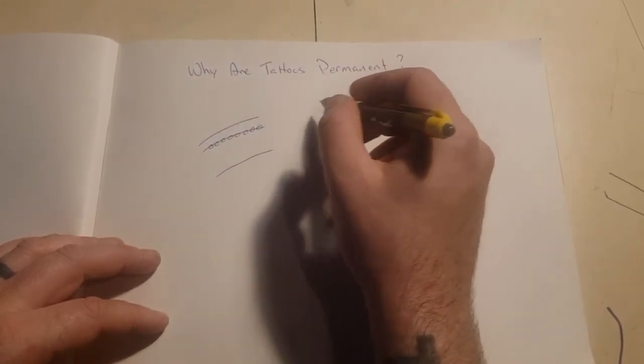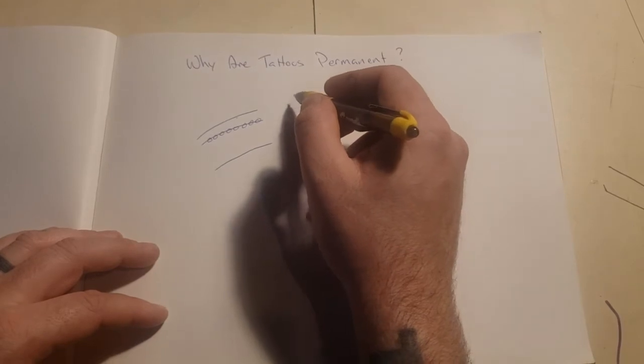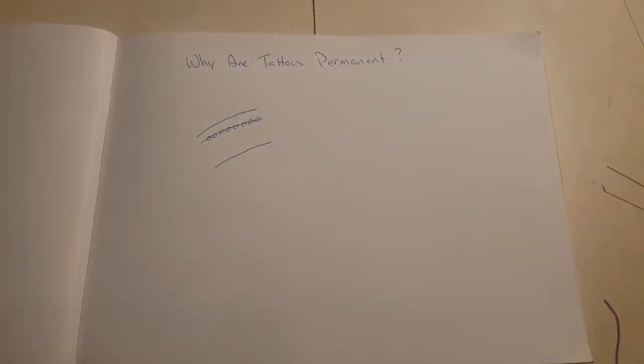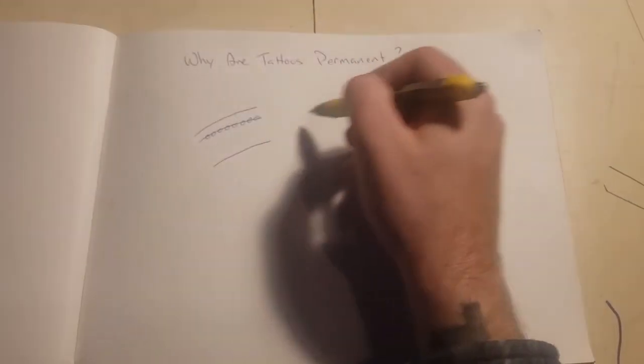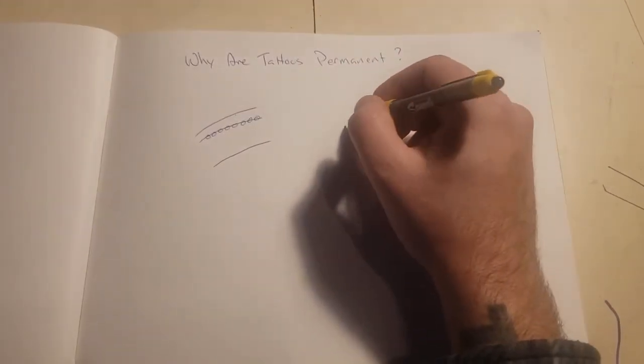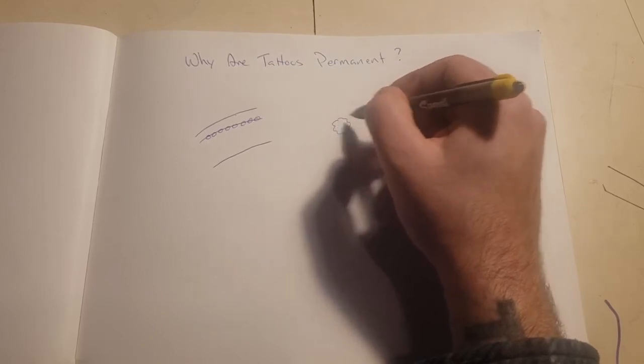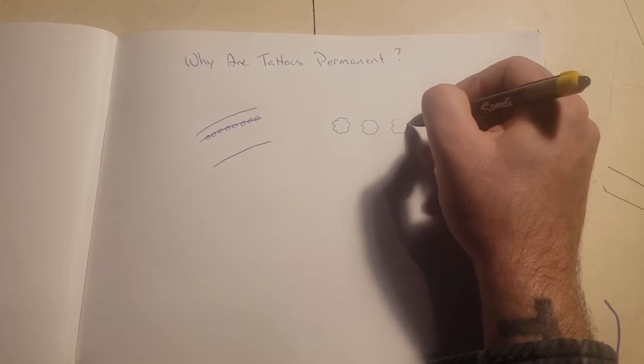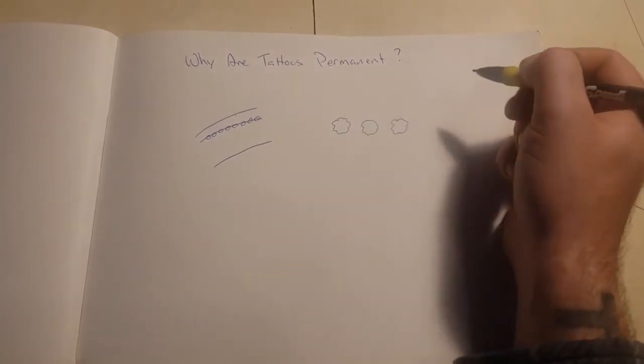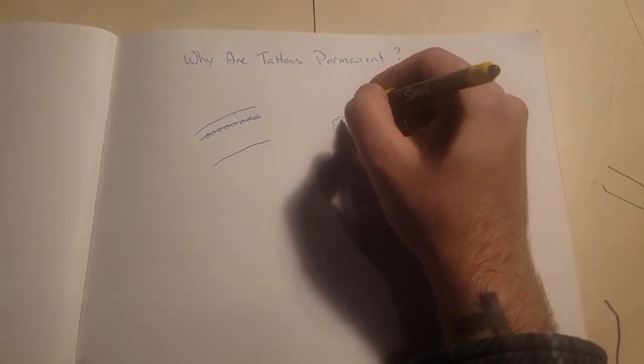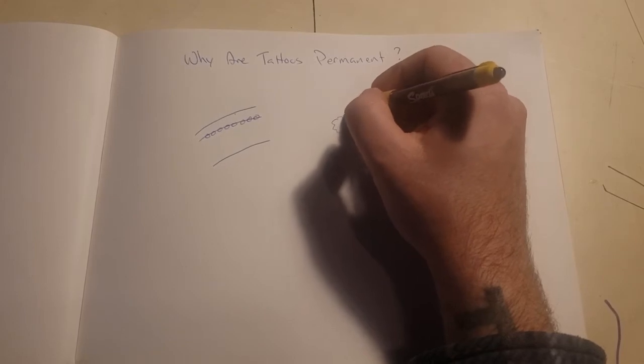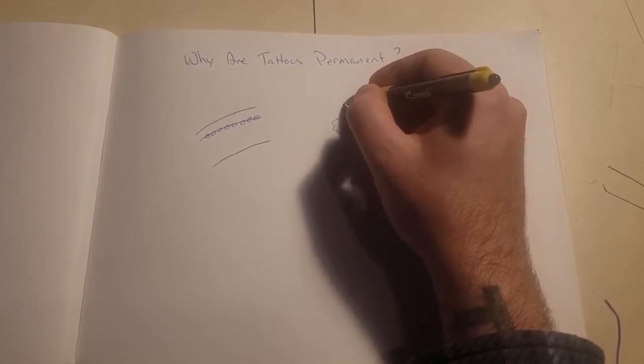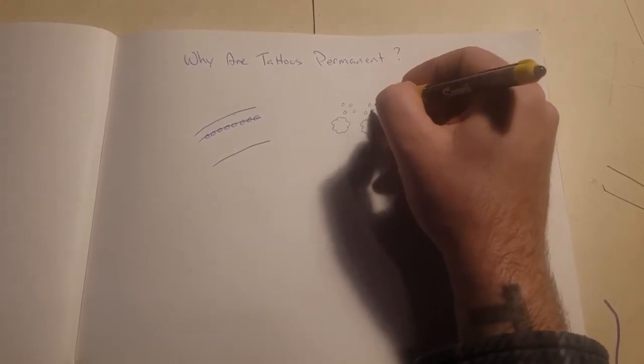As science has progressed and people's ability to do more finite research has improved, we found out that tattoos are permanent because of an immunological response. There are these special cells called macrophages. Macrophages are one of the first lines of defense for your body. What they do, through a process called phagocytosis, is gobble up bad things that are identified as threats inside your body.